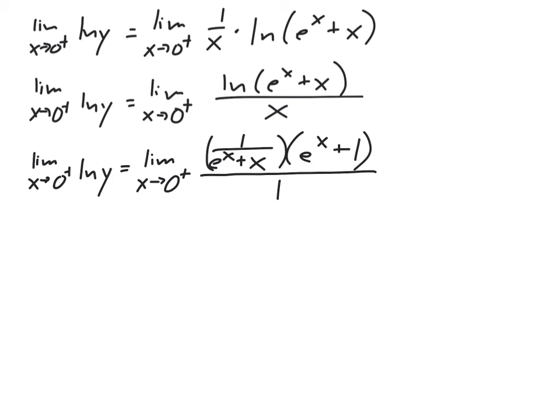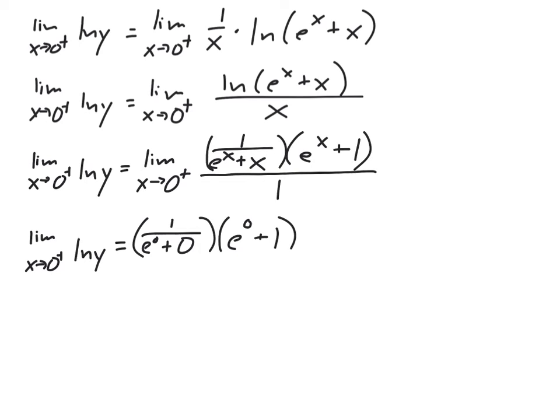Let's go ahead and try plugging in 0. When I plug in a number, I don't write limit anymore — only while there's still an x. Plugging in 0: e to the 0 equals 1, so the bottom of the fraction becomes 1 plus 0, which is 1. 1 over 1 is 1. And e to the 0 plus 1 is 1 plus 1, which is 2. So the right-hand side equals 2.